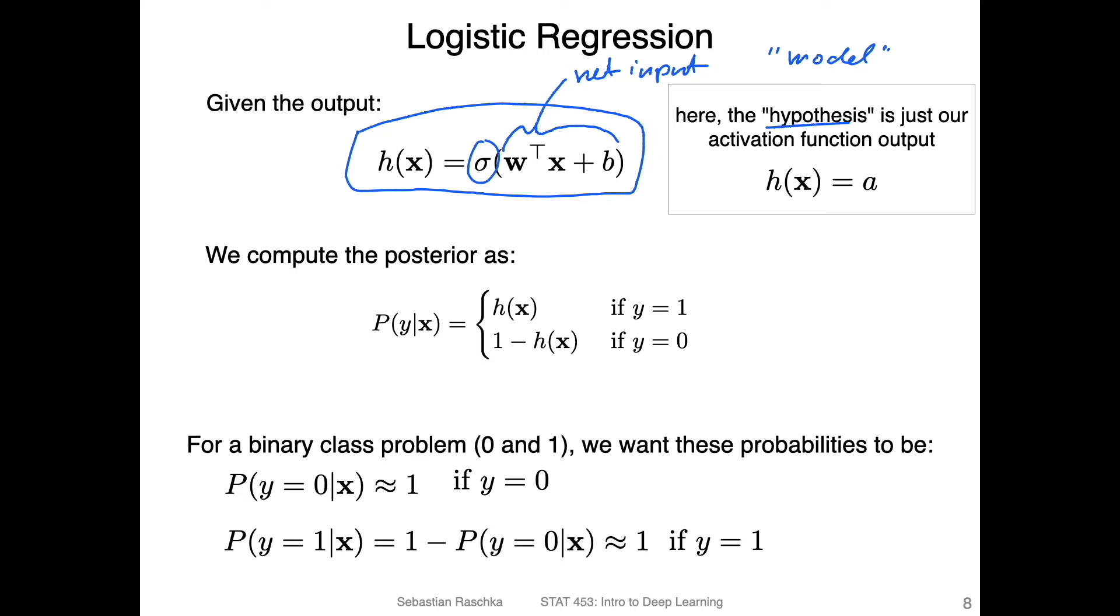Then you have this logistic sigmoid activation function that I showed you in the previous slide, which returns a value between zero and one. You can actually think of this whole model here as a model that computes the posterior probability, the probability of class label y given a feature vector x, so y is the class label.